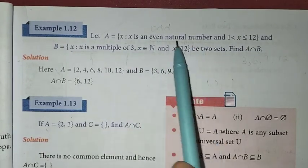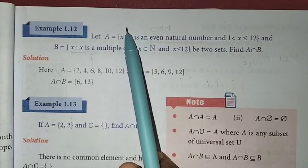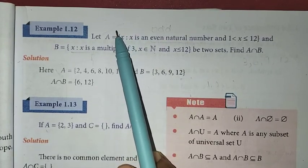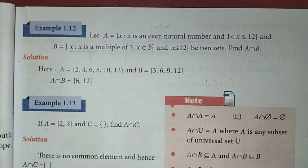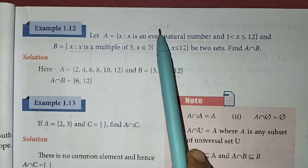The problem is given in set builder form. First, we need to convert to roster form. We can convert from set builder to roster form, then we can find the intersection.